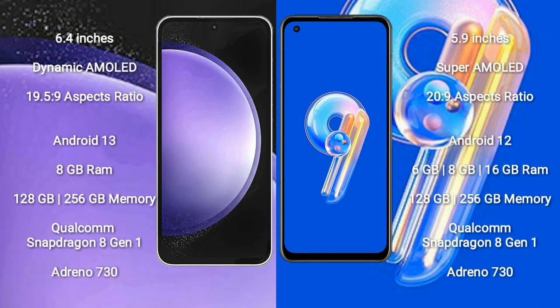Samsung Galaxy S23 FE comes with a 6.4-inch Dynamic AMOLED display and aspect ratio 19.5:9. Asus Zenfone 9 comes with a 5.9-inch Super AMOLED display and aspect ratio 23:9. Samsung Galaxy S23 FE runs on Android 13, while Asus Zenfone 9 runs on Android 12. Samsung Galaxy S23 FE has 8GB RAM and 128GB or 256GB storage, with Qualcomm Snapdragon 8 Gen 1 processor and Adreno 730 GPU.